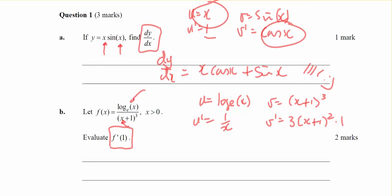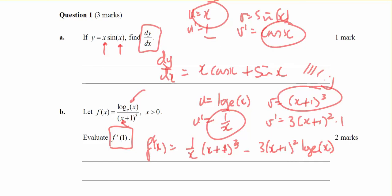So on the formula sheet it tells me that f dash of x will be v times u dash, so 1 on x times x plus 1 to the power of 3, minus 3 times x plus 1 squared times log base e of x, all over x plus 1 cubed squared.